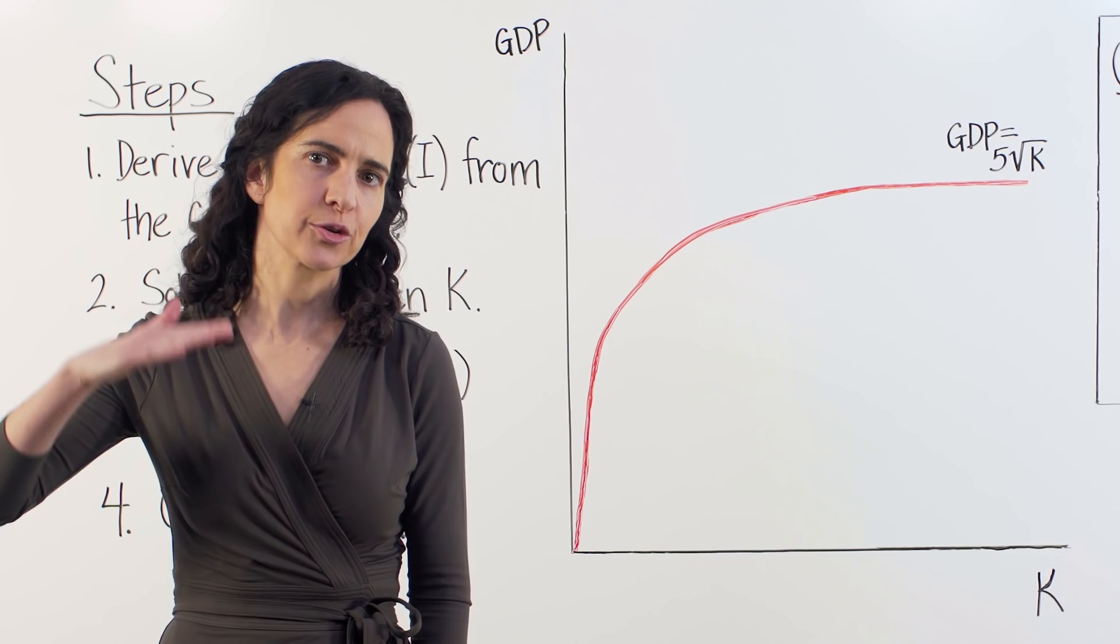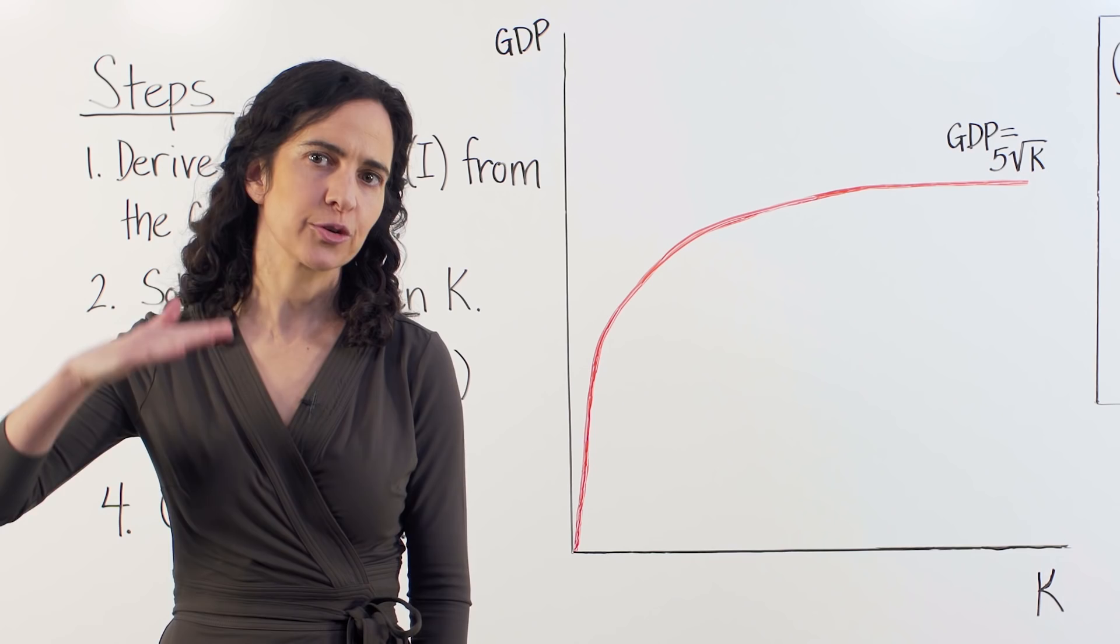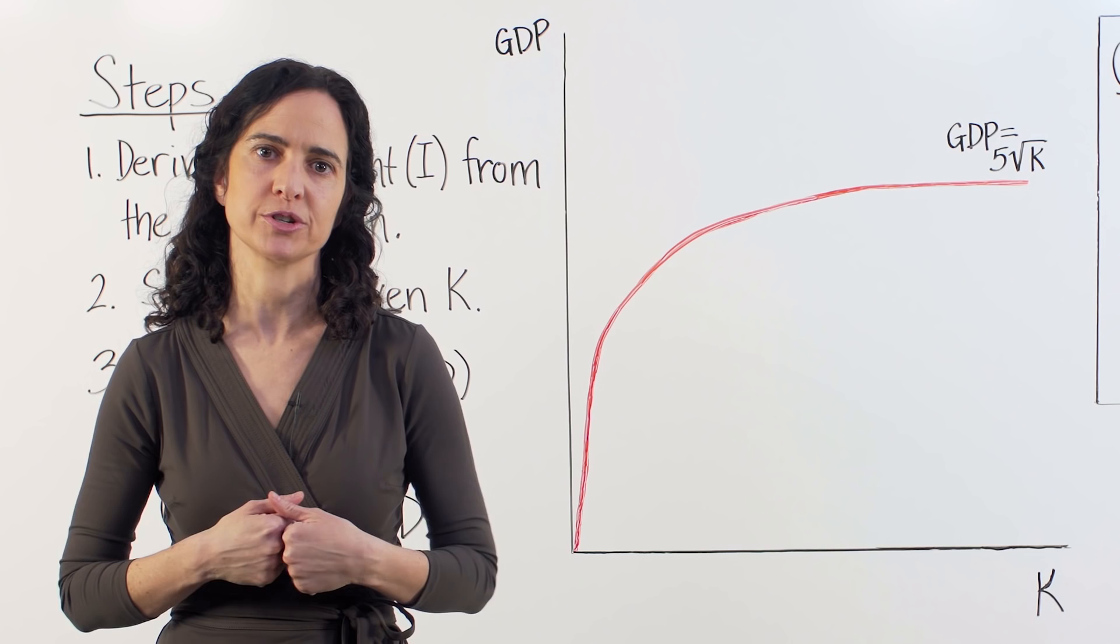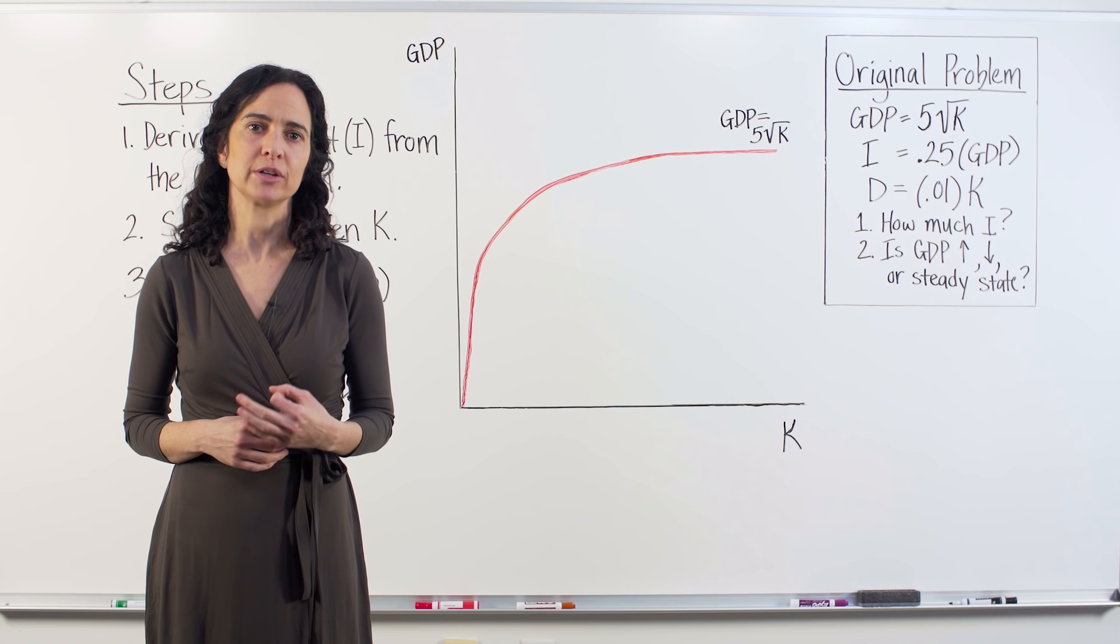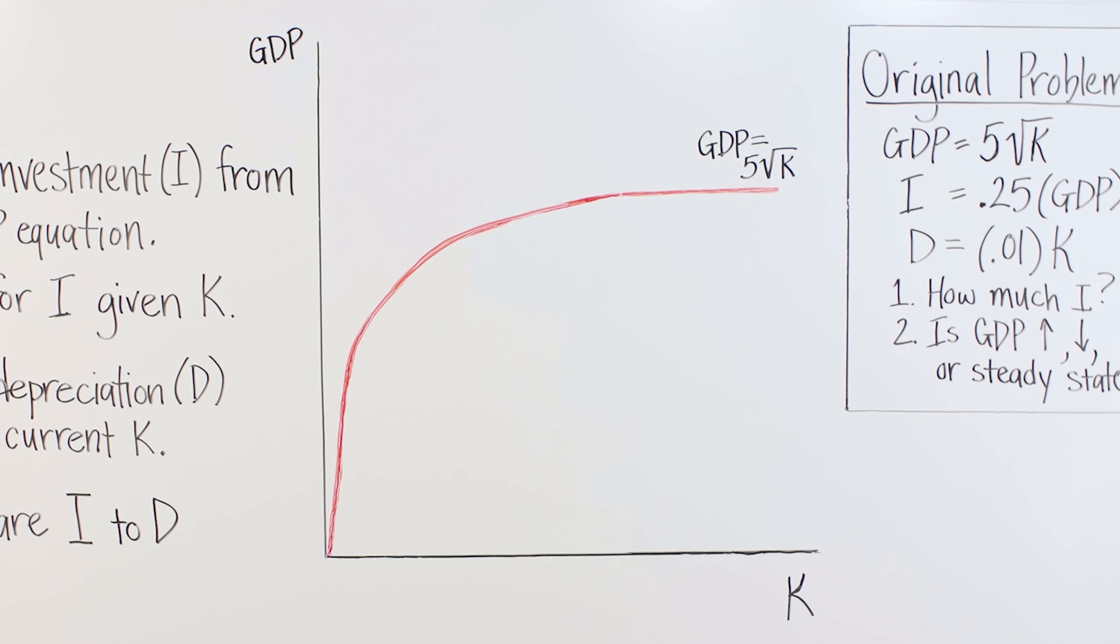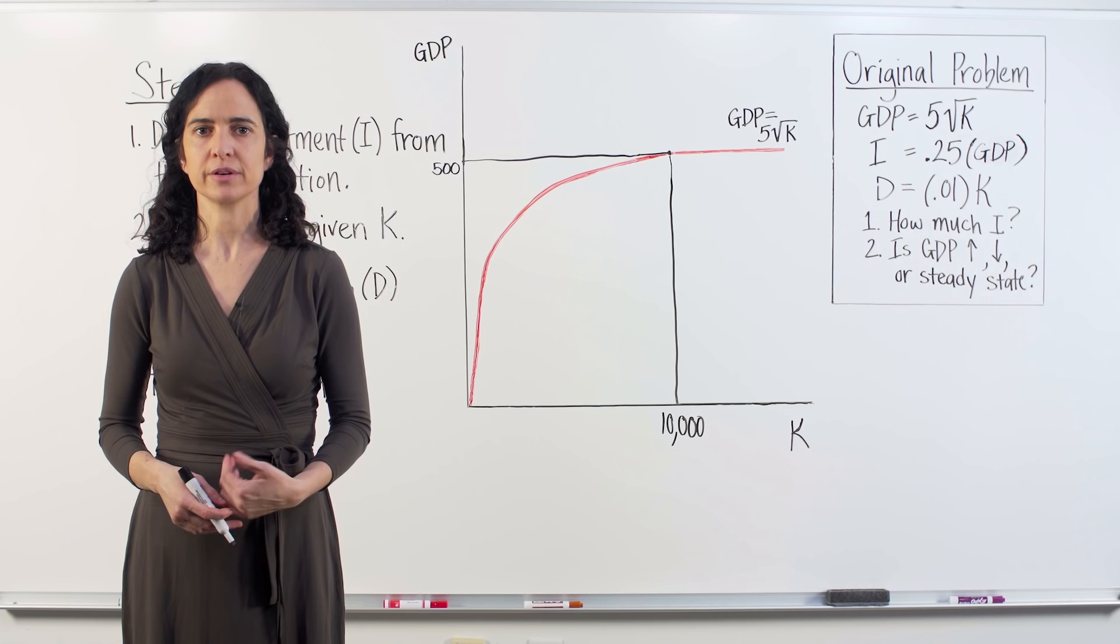It's also worth noting that we're actually holding other variables that could affect GDP constant, things like education or population and ideas. So increasing capital is the only way this country's GDP grows. In our example, this country has $10,000 worth of capital. If we plug that into the equation, GDP is 500.